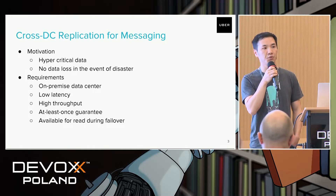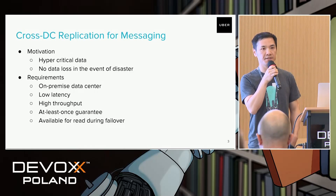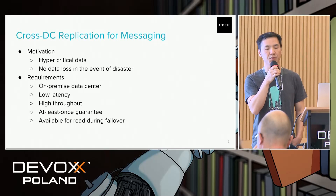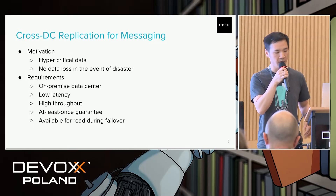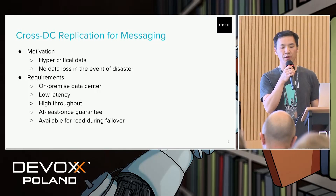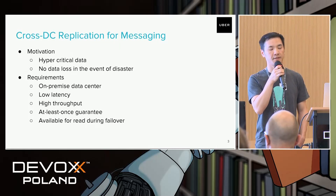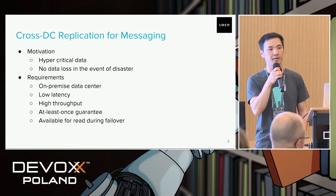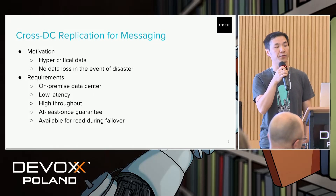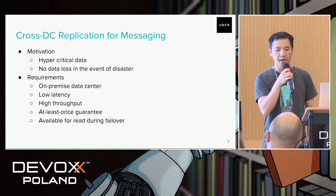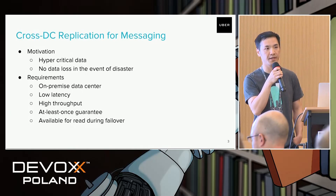This means we need to replicate our data to our other data center, and doing it asynchronously is not sufficient because we need to acknowledge the producer that the data is really persisted in the other data center. In addition to the no-data-loss guarantee, we also have other requirements: we are running on our own on-premise data centers, so we need to provide very low latency and very high throughput for both producers and consumers, and we need very high availability — even during a failover, the data must be available for read.